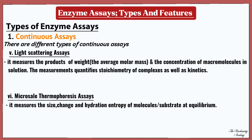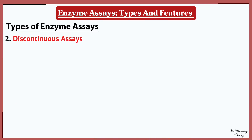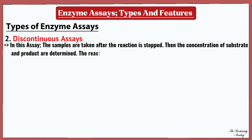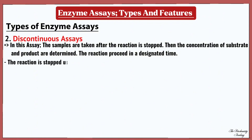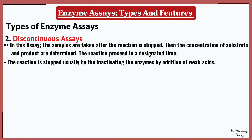Next, let us talk about discontinuous assay. In this assay, samples are taken after the reaction is stopped, and then the concentration of the substrate and products are determined. The reaction proceeds for a designated time and is then stopped, usually by inactivating the enzyme. These enzymes are inactivated by weak acids.